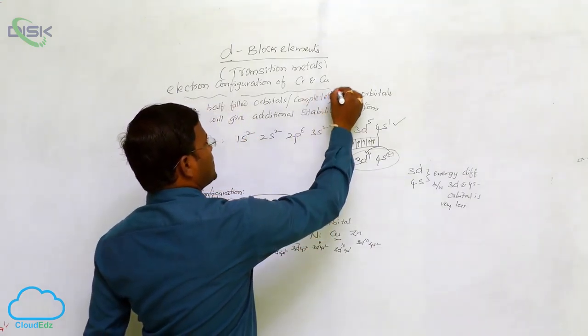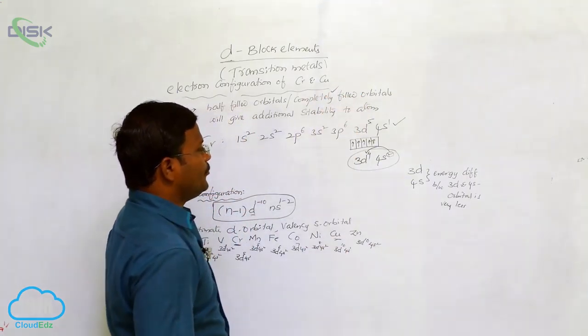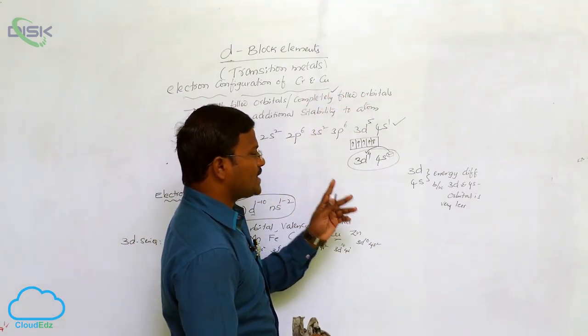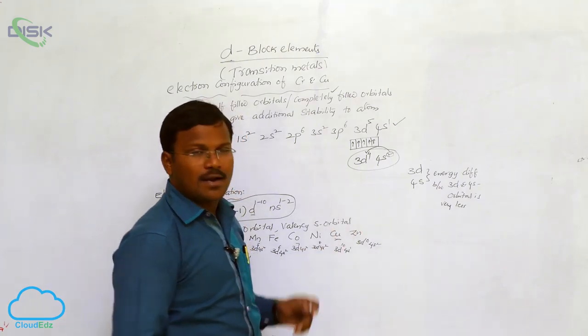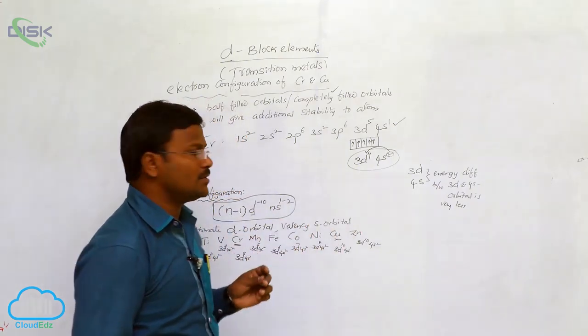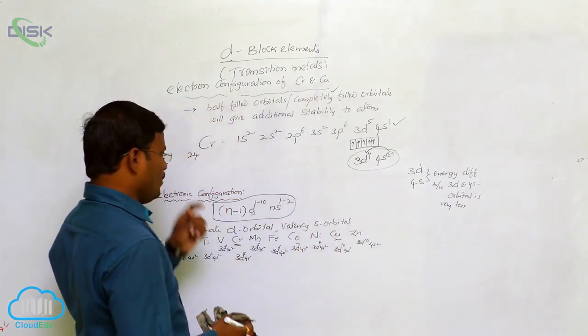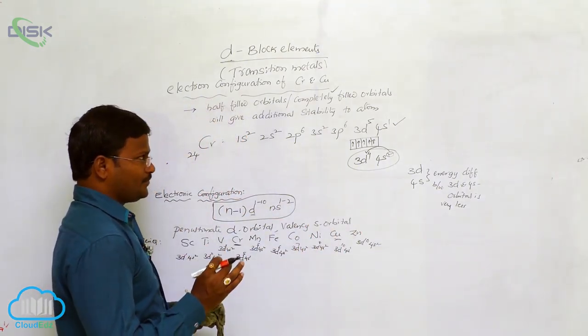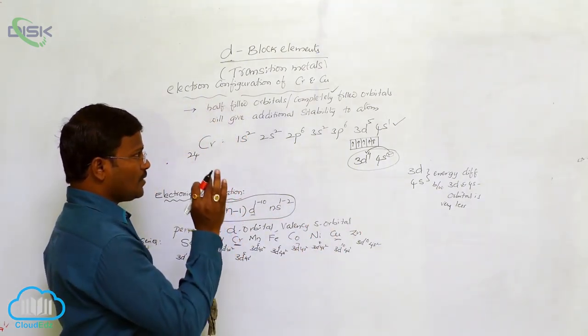As per this statement, due to 3D5-4S1 electron configuration, chromium will exhibit extra stability.